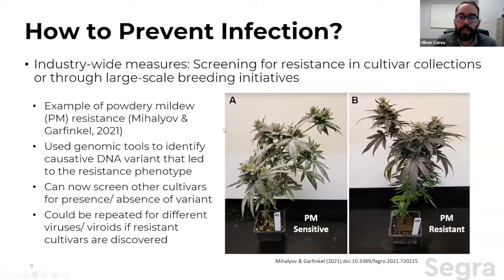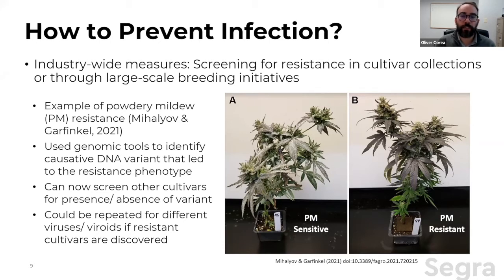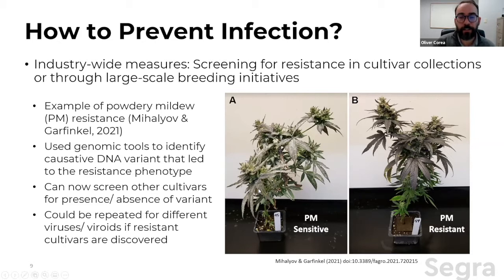At a larger industry-wide scale, measures include screening cultivars for resistance through phenotype hunting or large-scale breeding programs. A good example came from a group in Washington State and Oregon that identified a cultivar with powdery mildew resistance, then used genomic tools to narrow down the specific DNA variant responsible for that resistance phenotype. This process could be repeated if virus- and viroid-resistant plants are identified, and DNA markers corresponding to those resistances could be discovered.